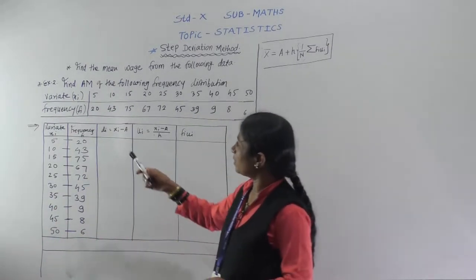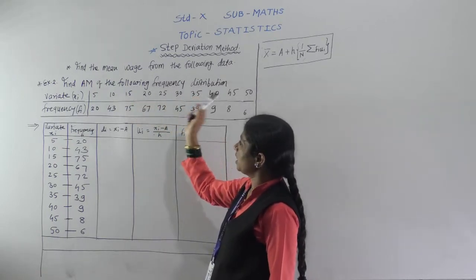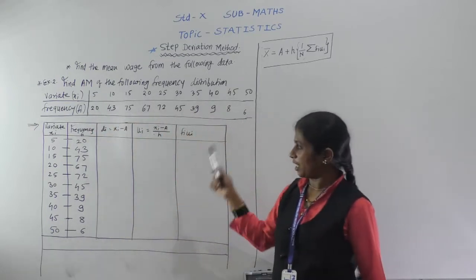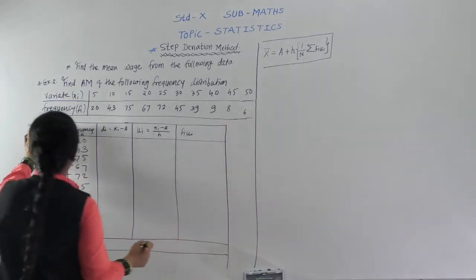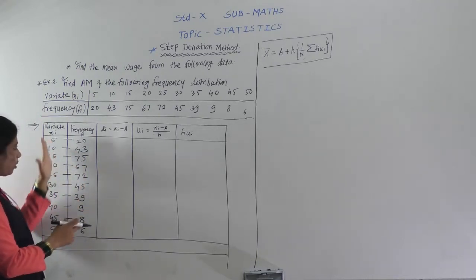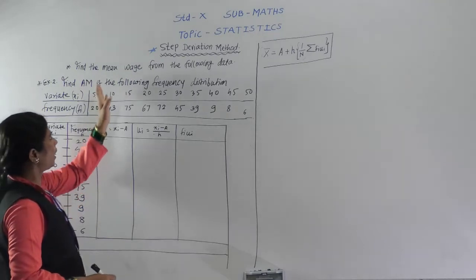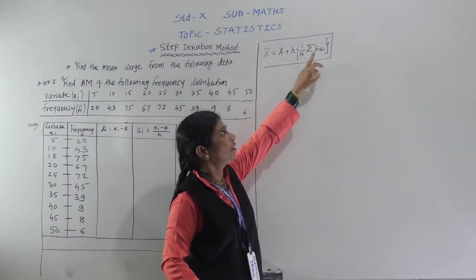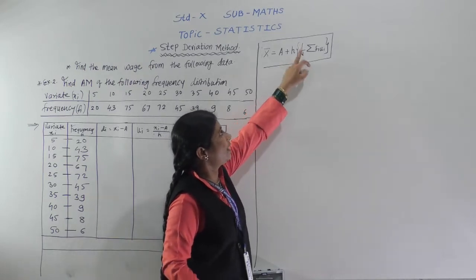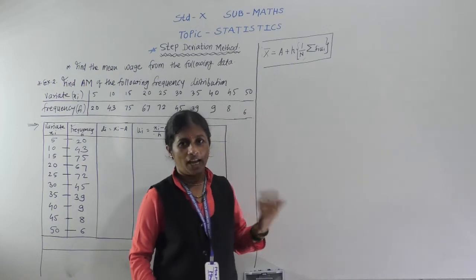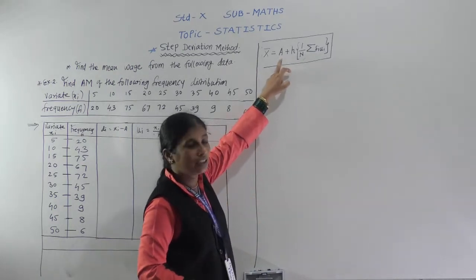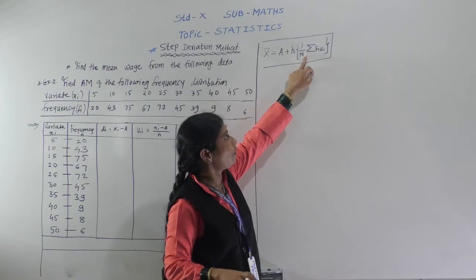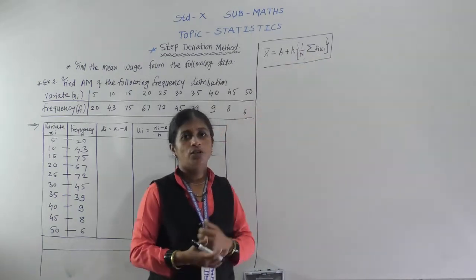Now we will see the next example: find the arithmetic mean of the following frequency distribution. The variate xi values and corresponding frequencies fi are given. We know the step deviation formula: x̄ = A + h × (1/n) × summation of fi·ui, which can also be written as A plus h times summation of fi·ui upon n.